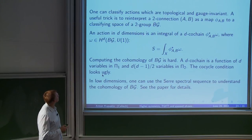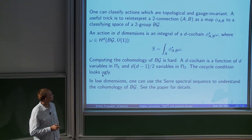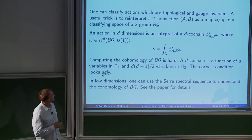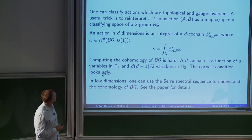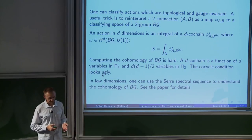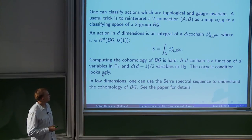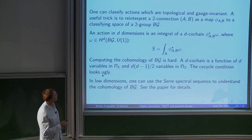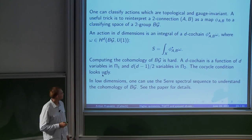For the weights, it's convenient to reinterpret the two-connection as a map from the triangulated space X to the classifying space of a two-group. The classifying space of a two-group is a fibration whose base is the classifying space of π₁ and whose fiber is the iterated classifying space B²π₂, with the fibration described by the remaining data of the two-group. This space has some cohomology in degree D, and you can define an action by pulling back any class in degree D cohomology using the map φ encoding the two-connection.